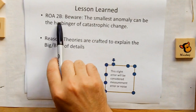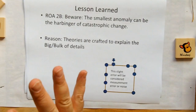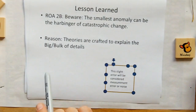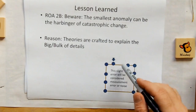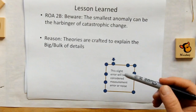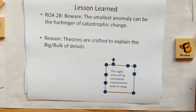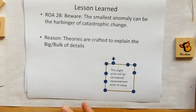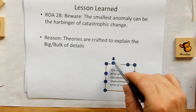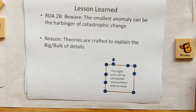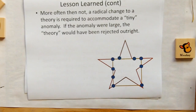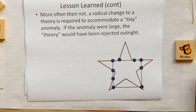So the lesson to be learned — a rule of acquisition — is to beware: the smallest anomaly can be the harbinger of catastrophic change. Theories are crafted to explain the bulk of the details, and we pick the theory that fits our observations and dismiss the little anomaly as probably a measurement error. We explain it away within the realm of the existing theory. But if we do our due diligence and figure out why that little outlier is off, we may find that a completely different model fits those observations best. That tiny anomaly can change our theory drastically.